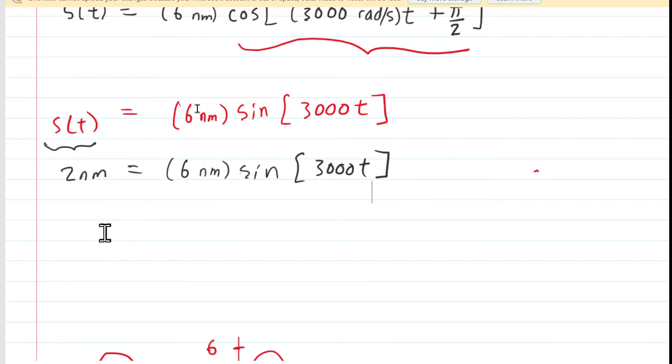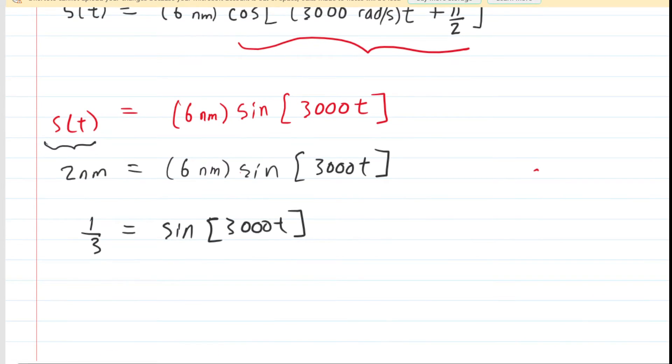So on the left side, you get 2 sixths or 1 third. And then we would have to take the inverse sine of both sides of the equation. So if we take the inverse sine of the left side, we have the following quantity. On the other side, taking the inverse sine of sine eliminates the sine term, so we just have 3000t.